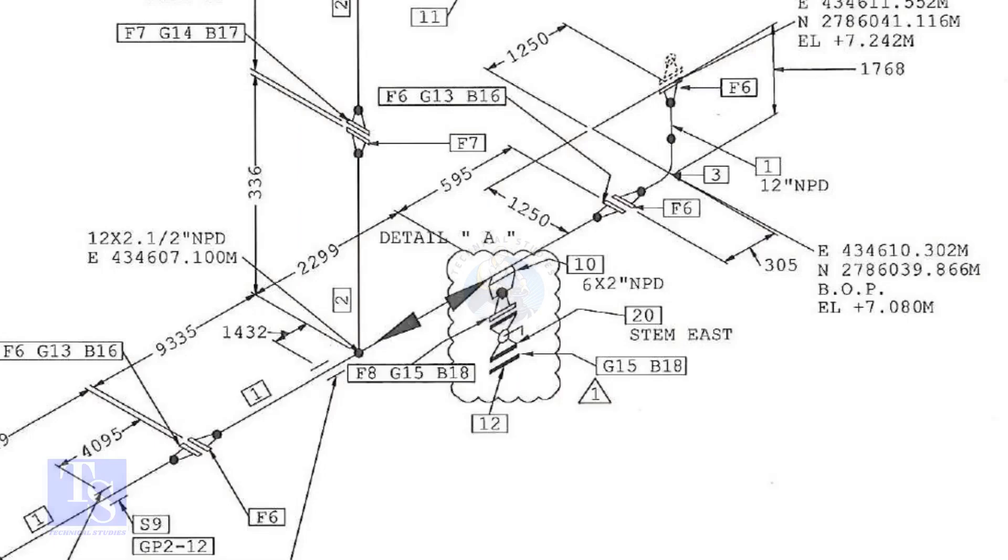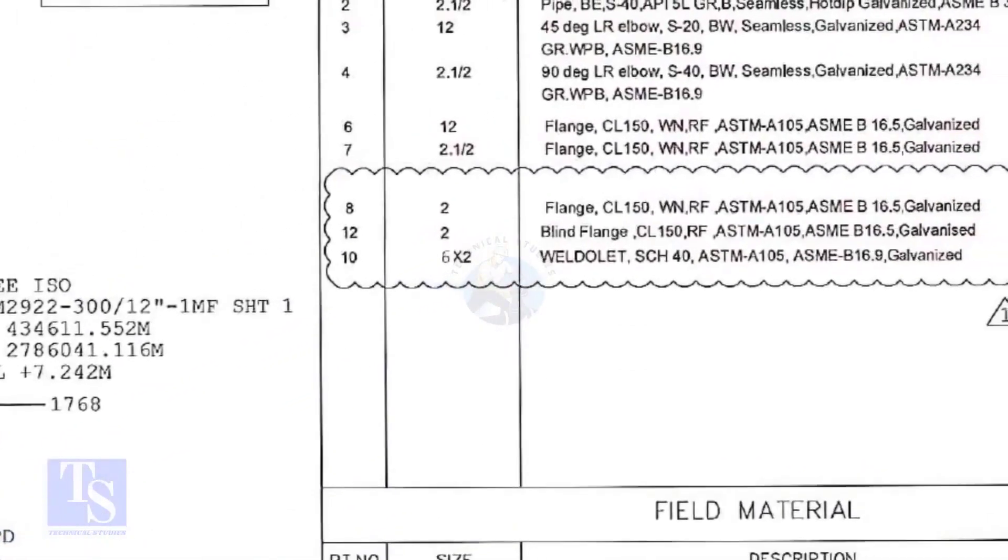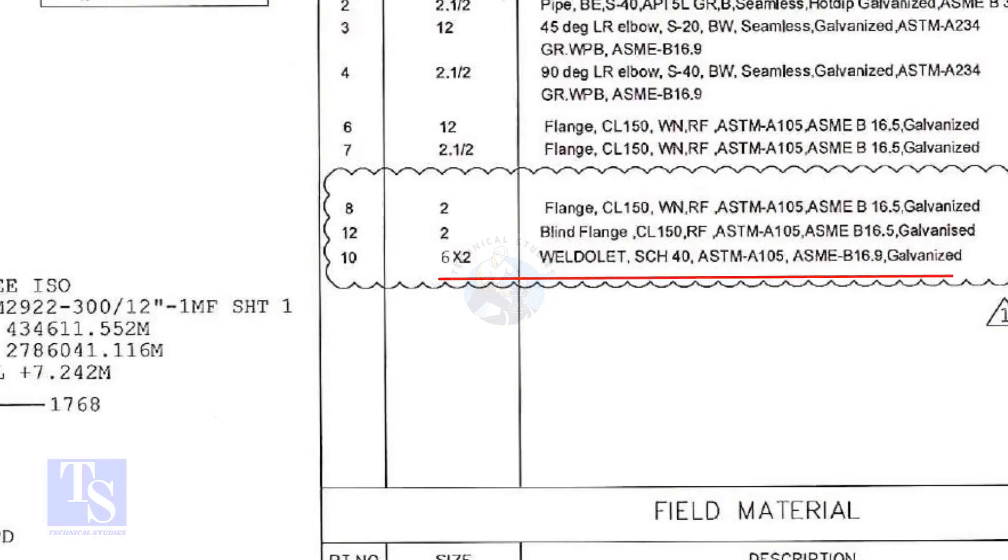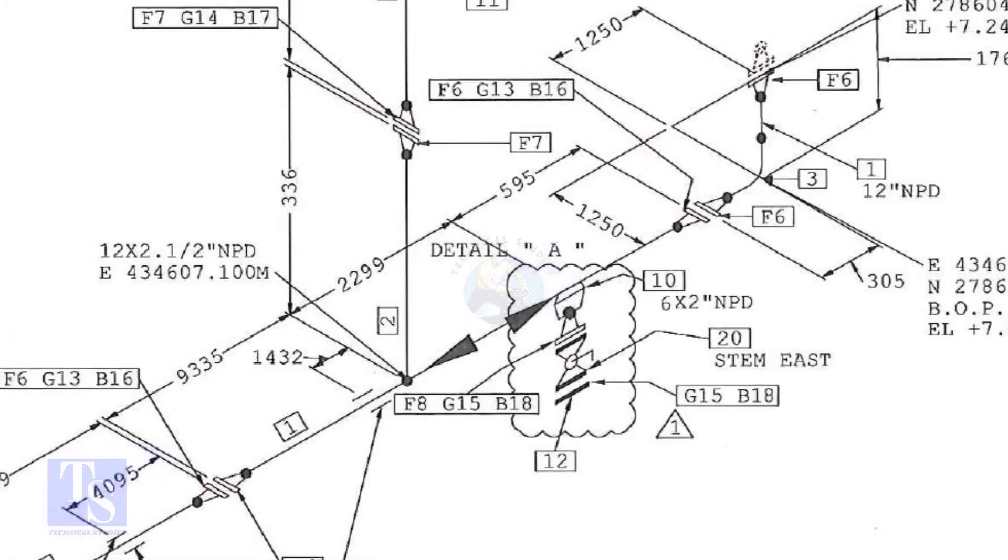Let us check what is item number 10 in the description. The center of the weld-olet is 595mm away from the face of the flange. Now, we are going to mark this distance on a pipe with a flange fitted on it.